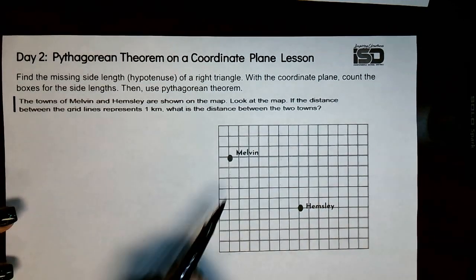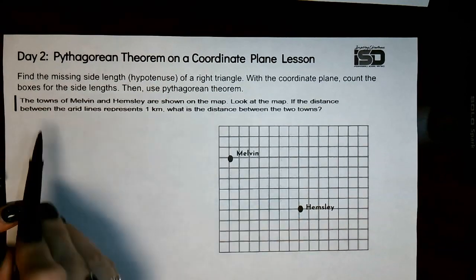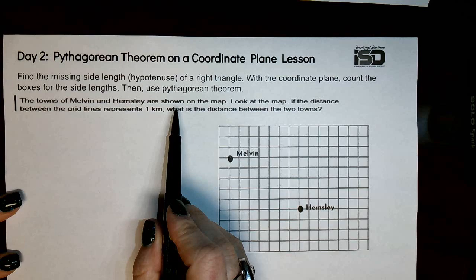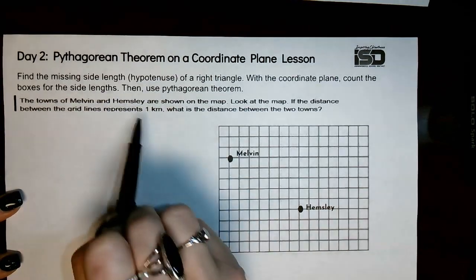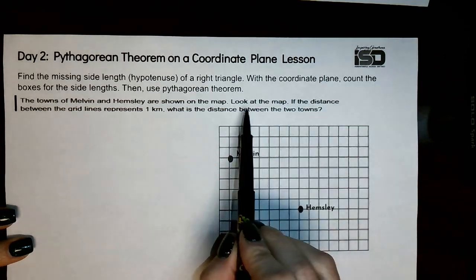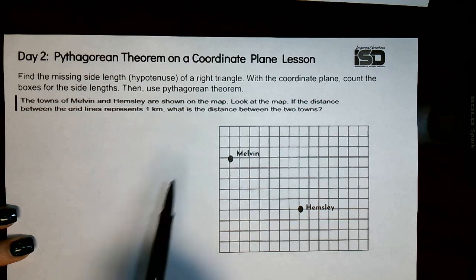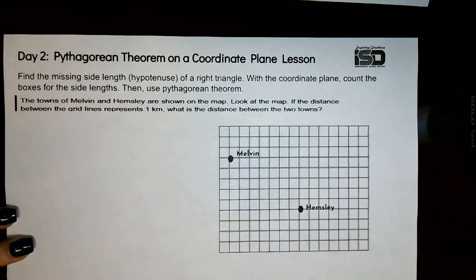So what we're actually trying to find is the distance between these two points. Right now we are given an actual situation. The towns of Melvin and Hemsley are shown on the map. If the distance between the grid lines represents one kilometer, what is the distance between the two towns?